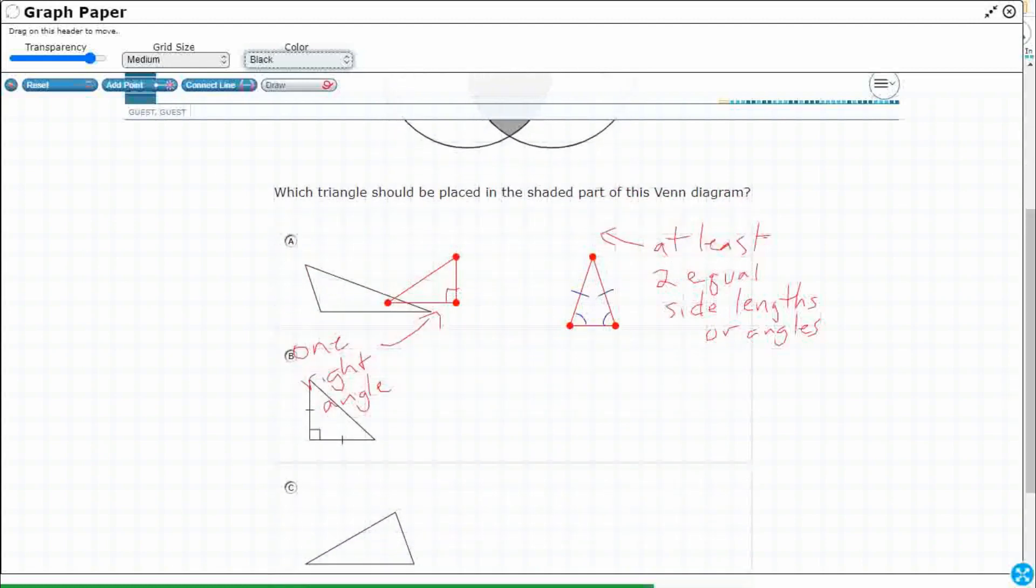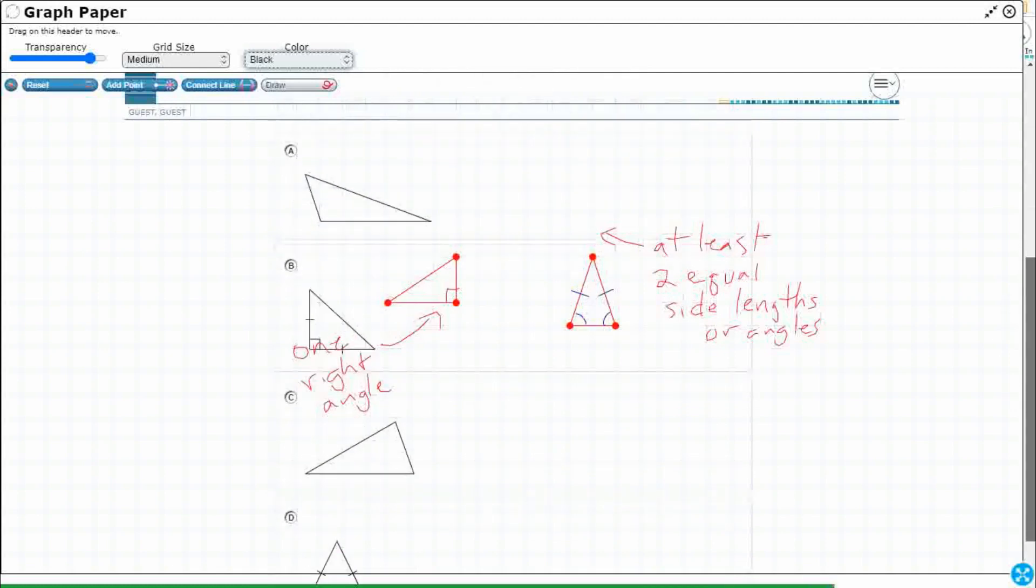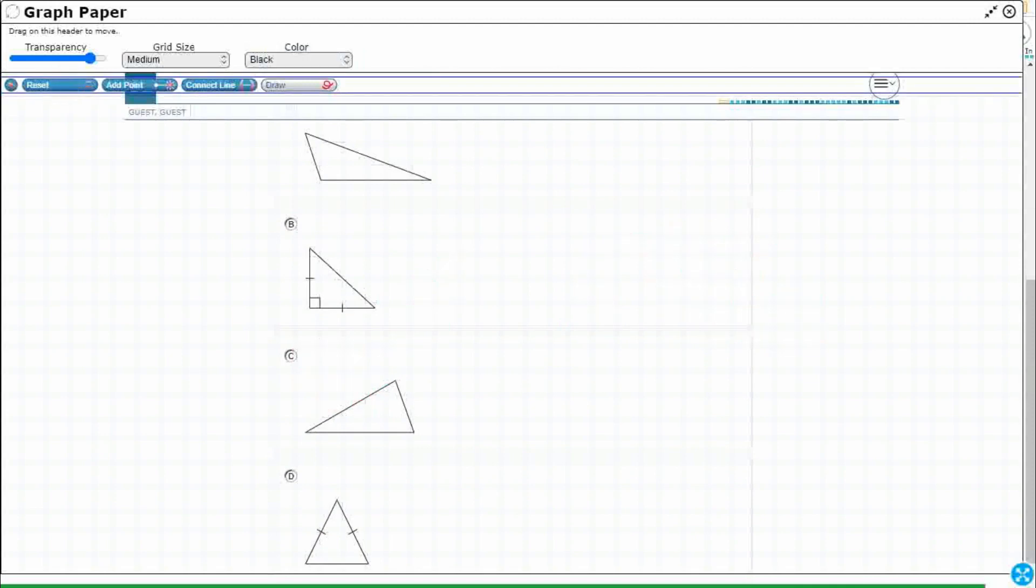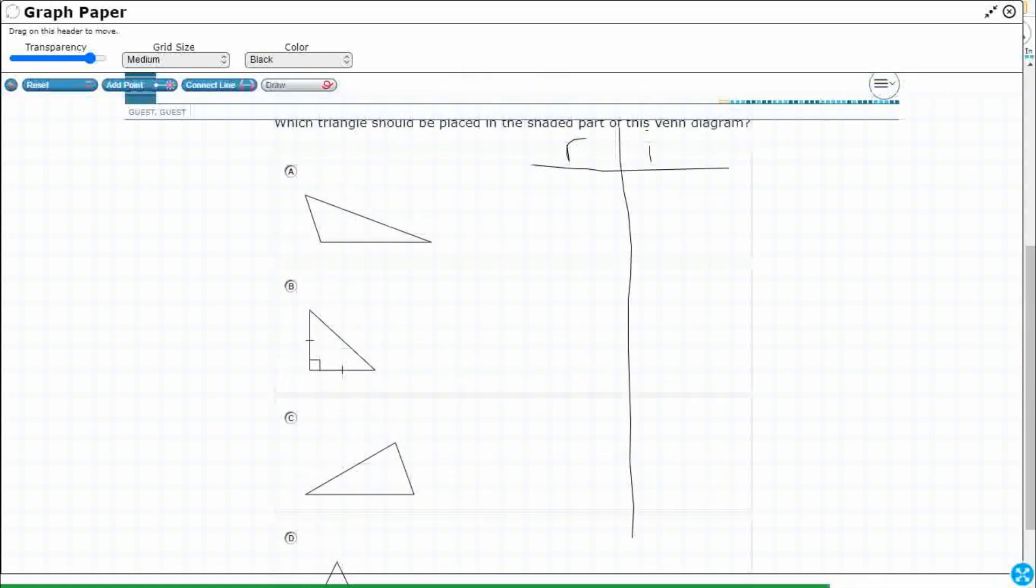I'm looking for two things. Is it right? And is it isosceles? So I do not see a right angle in A. So that's a no. And isosceles means it has two equal sides. And that looks more like a scalene. Looks like all three are different, right? This is definitely the longest, but this looks the shortest. So that's a no on both.